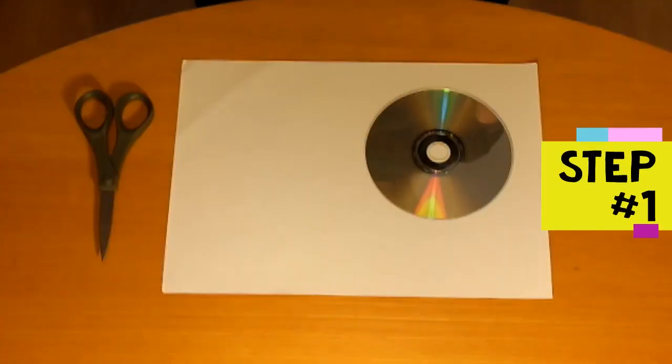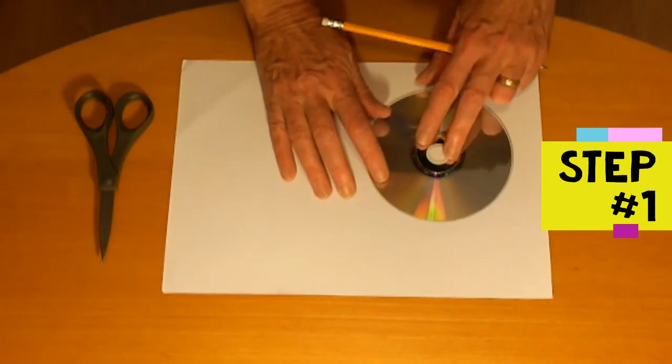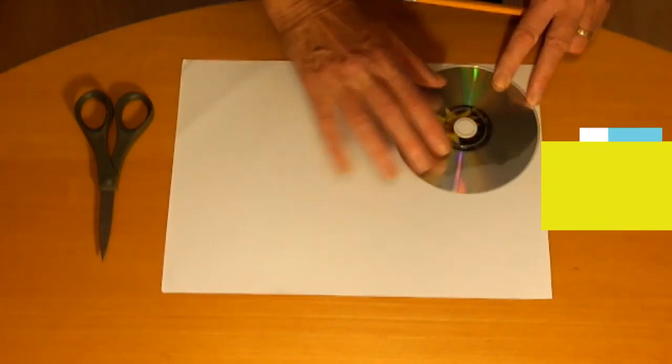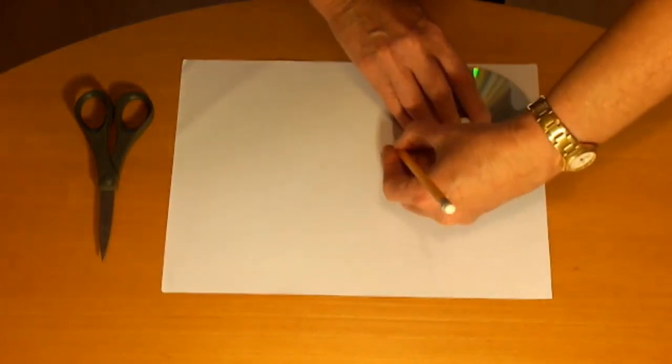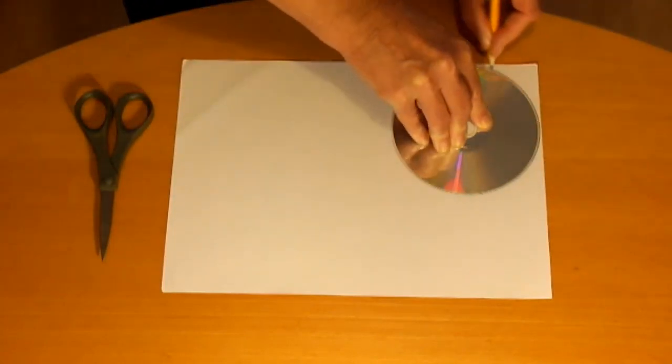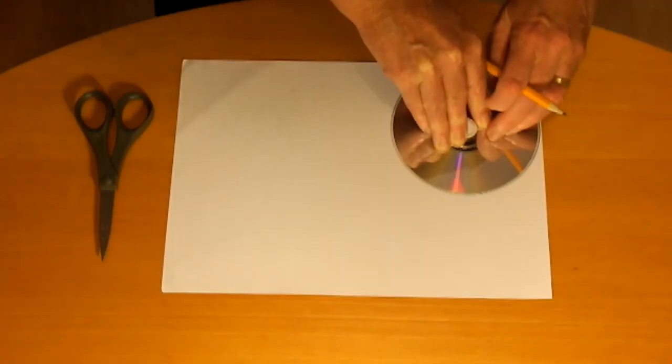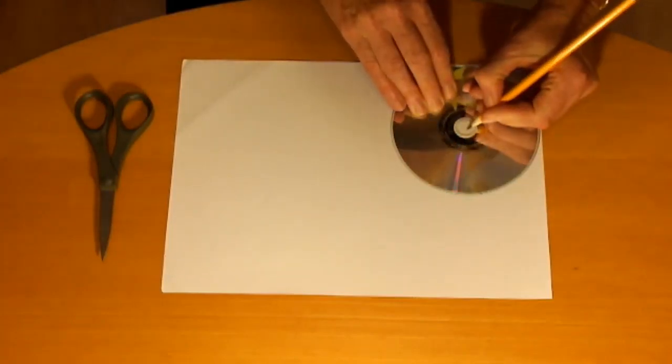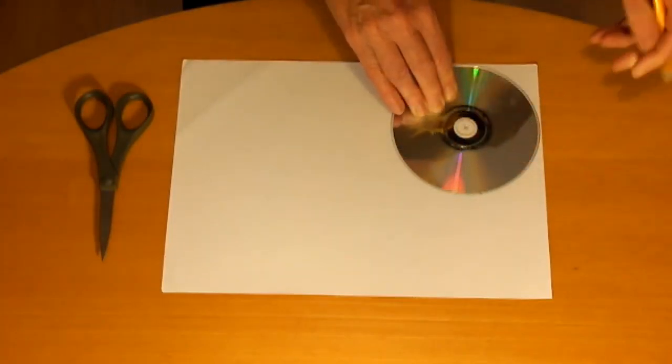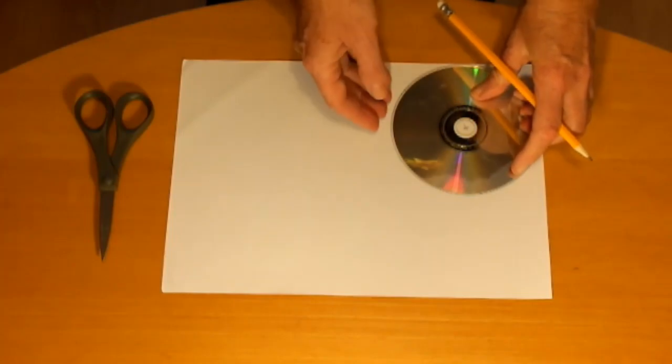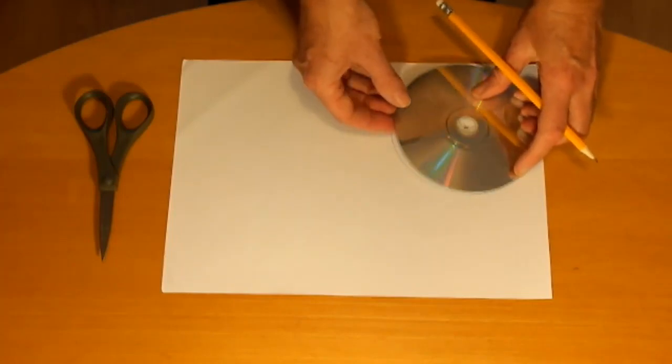Step one is to cut out the paper discs. So place the CD on the paper and draw around it. Make a cross in the middle. You should be able to get three discs out of one sheet of A4 paper and then cut out the three discs.